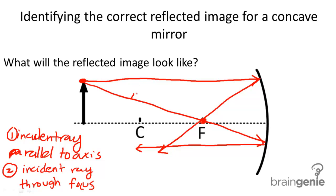Okay, so these are our incident rays, and these are our reflected rays. Now, where the reflected rays converge is this point right here. And then, this is exactly the top of the image, essentially.